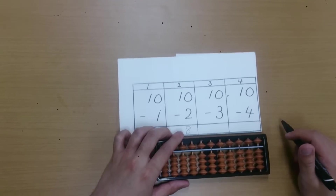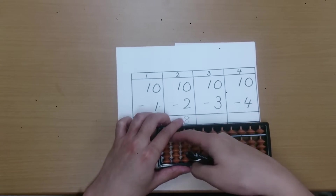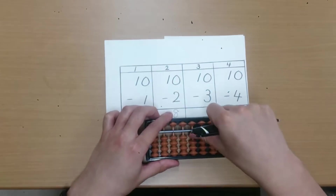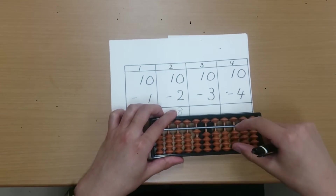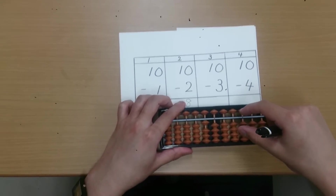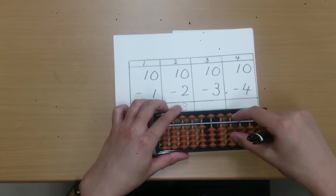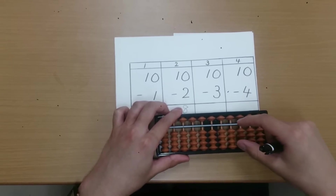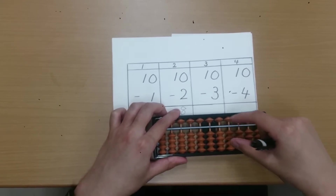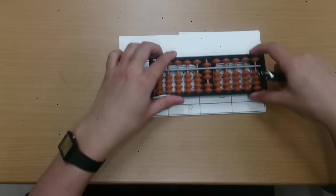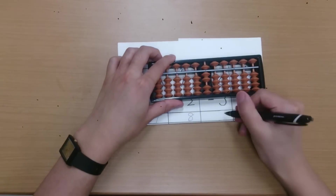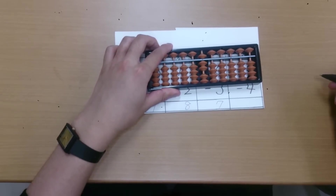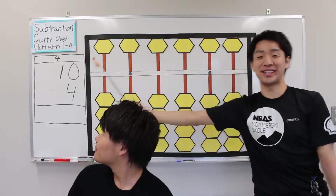Question number 3. Plus 10, minus 3. 2, subtract 3, subtract 10, and add 7. The answer is 7. Question number 4.